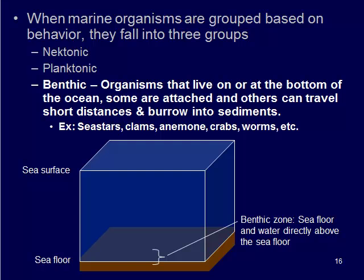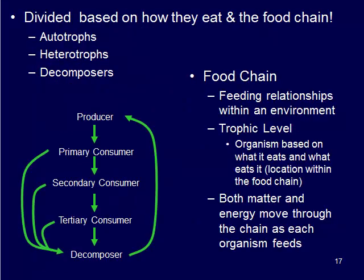So those are the three zones — nectonic, planktonic, and benthic — all based on behavior and where these organisms live. The next way we divide up organisms is based on how they eat in the food chain. We have this order of organisms that goes from producer to primary consumer, secondary consumer, tertiary consumer, and then decomposer. We break up these organisms based on how they eat and what they eat.